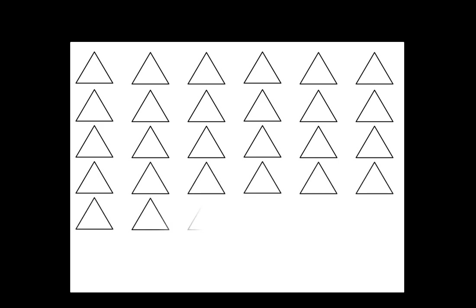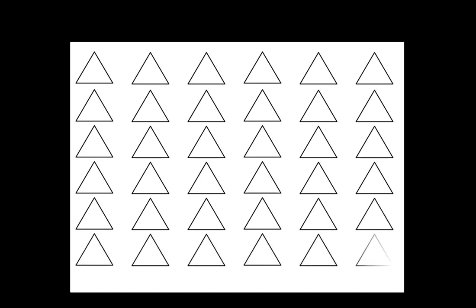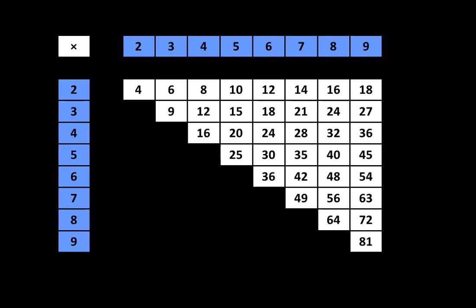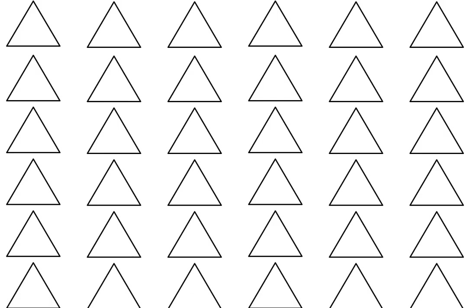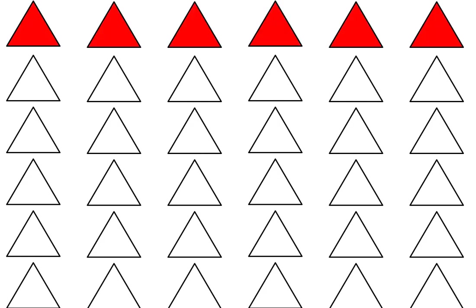Then a fourth row of 6 triangles, then a fifth row of 6 triangles. You can pause the video at any point; we'll continue when you're ready. Now that you've prepared your 36 triangles, each of the products, shown in white, will appear in the top of those 36 triangles. We'll begin by filling in the relationships in the 6 triangles across the top.